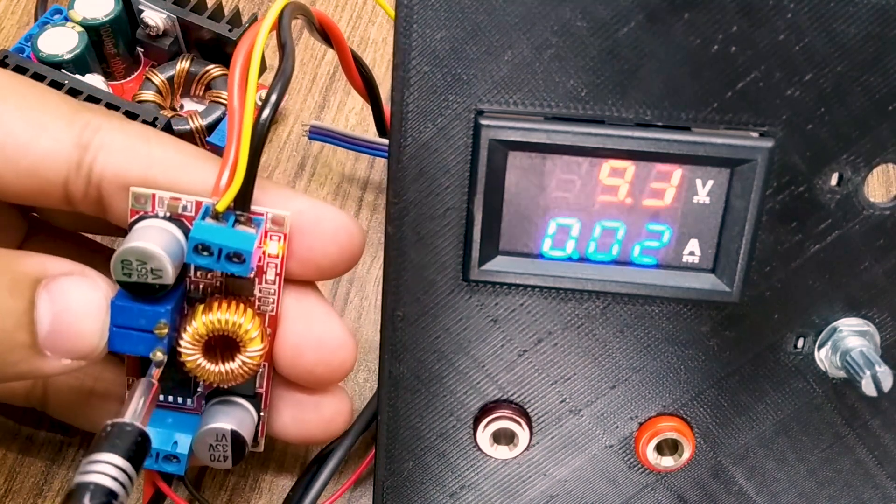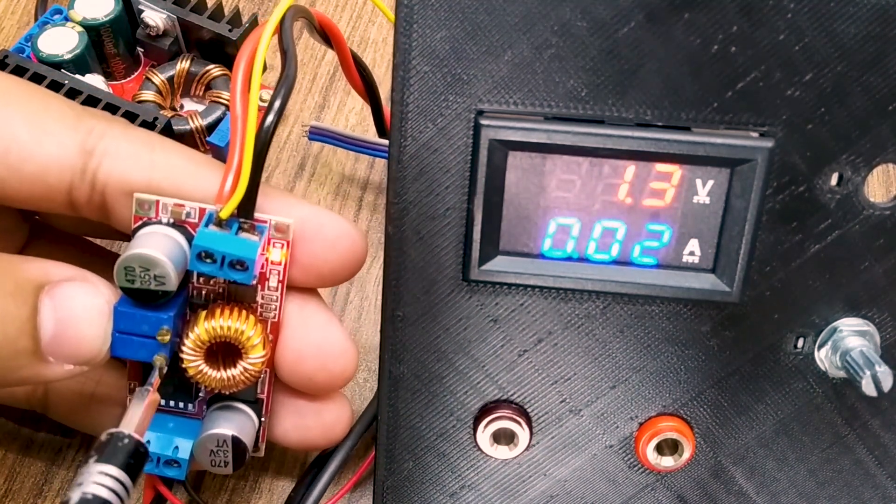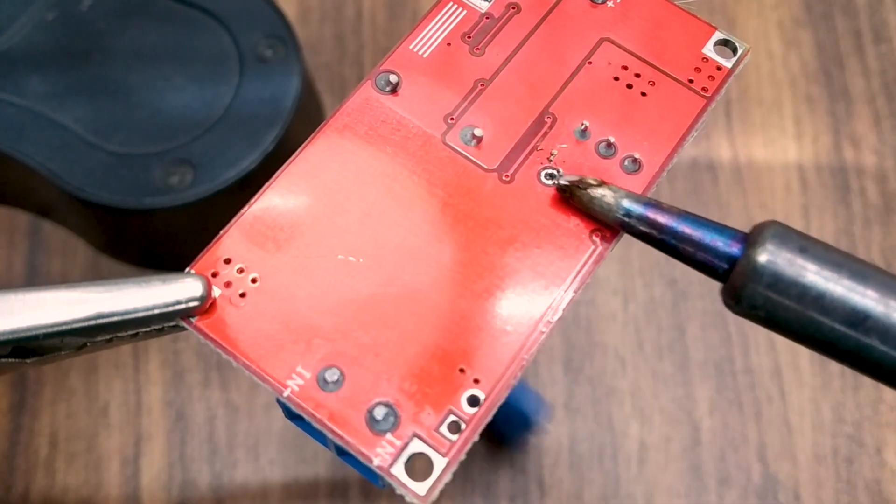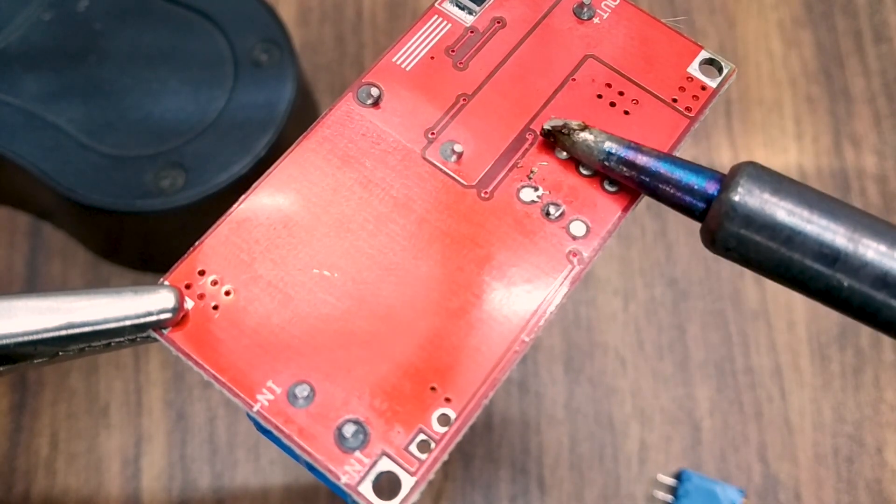It is surprising to know that both these modules are less than half the price of the LTC3780. I did the wiring again, this time according to this wiring diagram.